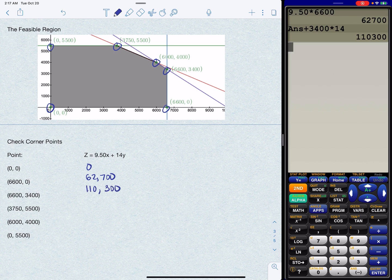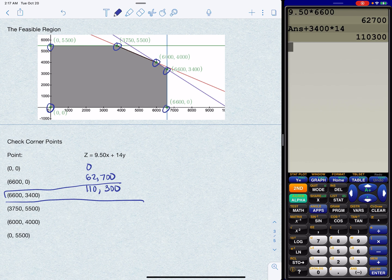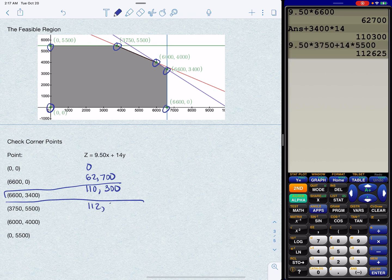So, so far, that's the front runner. Okay. And actually, that goes with this one. Okay. I'm not lining up too well here. So now let's check 3,750, 5,500. 9.50 times 3,750 plus 14 times 5,500. We have a new front runner, 112,625.